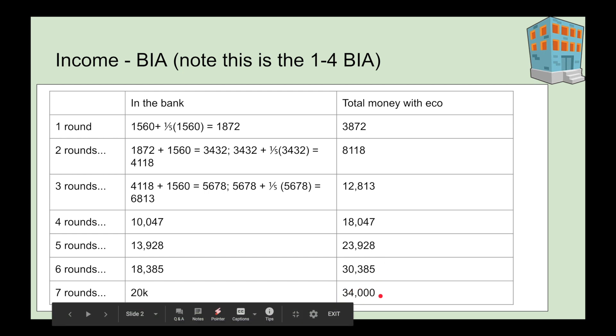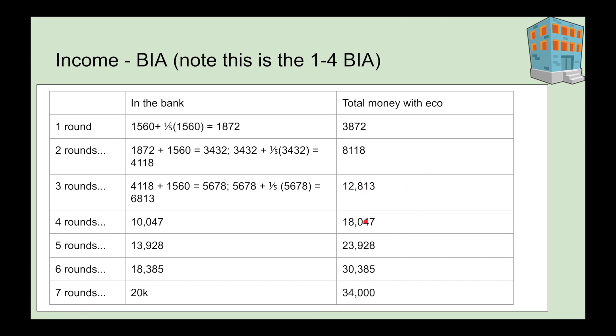The total money you're going to be getting with eco: after one round is $3872, after two rounds $8118, all the way to seven rounds is $34,000. But this isn't real money. This isn't money you can directly spend because this is money with eco.